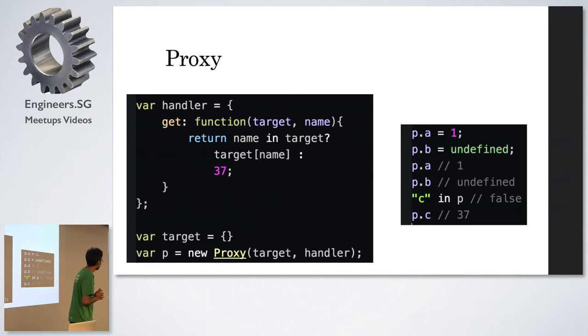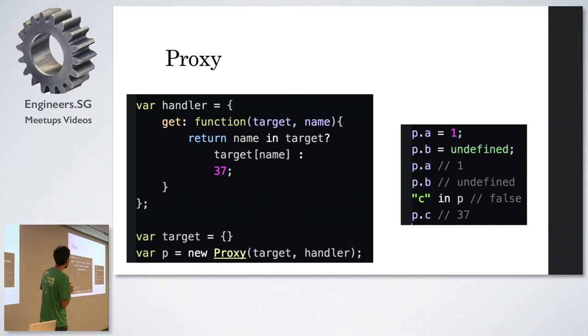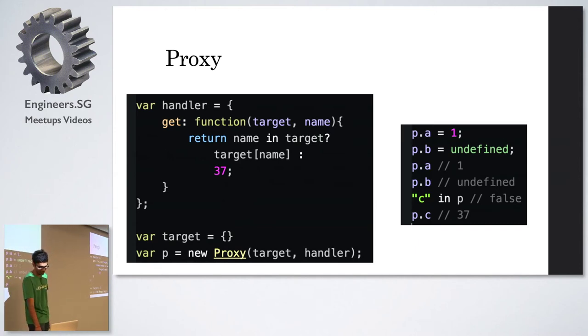Pretty interesting stuff can happen because of this. So if P of A equal to one and P of B is undefined. If you access P of A, P is the proxy here, so P of A will be one of course, but P of B is undefined. Now, if you check C isn't P, which basically checks if C is a property of P will return false because it doesn't have a property C. But if you actually go out and print P of C, it will print 37. That's because the proxy is seeing that the property is not there and I'll return 37. There are some crazy things that you can do with proxies.